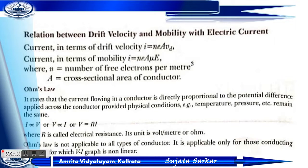Now, the relationship between current and mobility is I equals to nEAμE. We know that μ equals Vd divided by E, so we can write I equals nEAμE, where A is the cross-sectional area of the conductor.